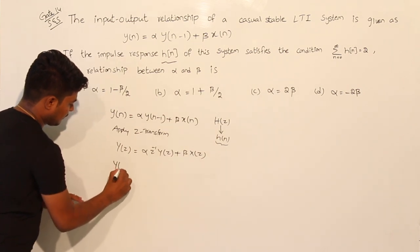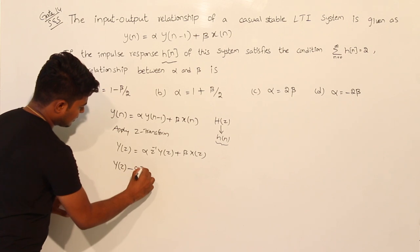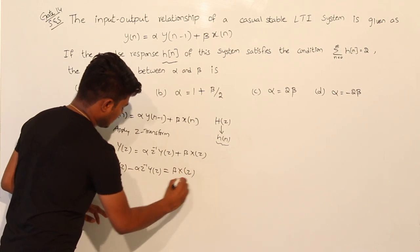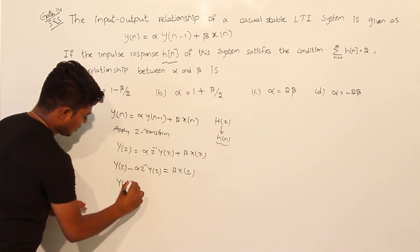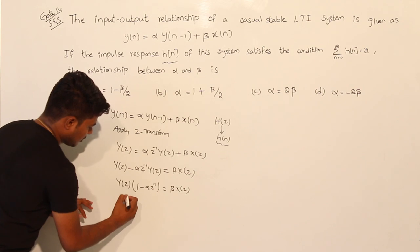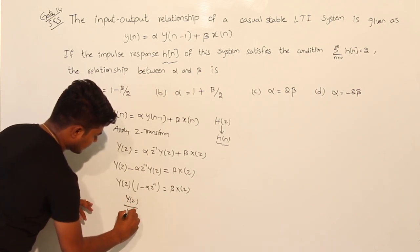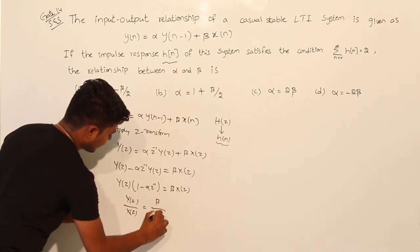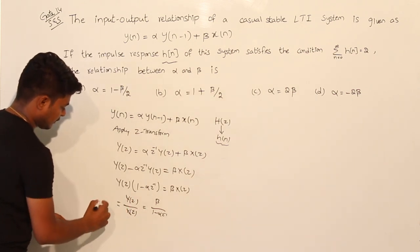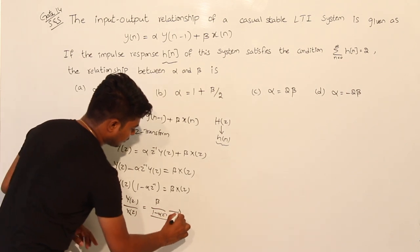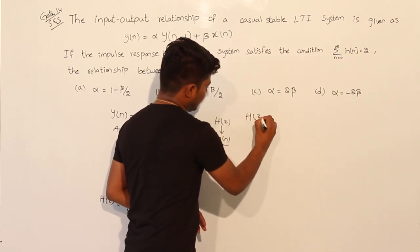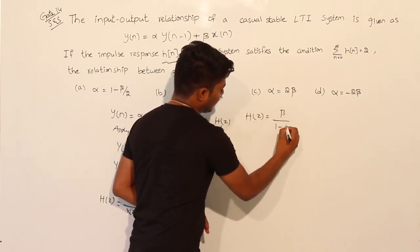Move it to the left-hand side: Y(z) - α·z⁻¹·Y(z) = β·X(z). Take Y(z) common: Y(z)·(1 - α·z⁻¹) = β·X(z). Therefore Y(z)/X(z) = β / (1 - α·z⁻¹). This equals H(z): H(z) = β / (1 - α·z⁻¹).